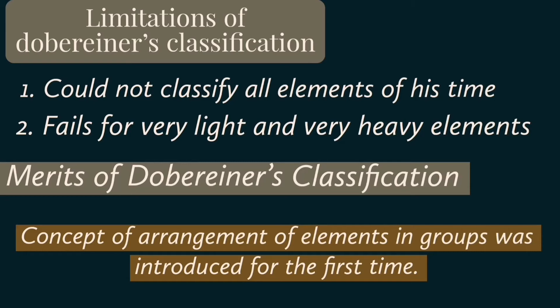Now, what are the limitations of Döbereiner's classification? Döbereiner made only three triads, meaning he classified only nine elements — so the number of elements classified was very small. Secondly, this law fails for very light and very heavy elements.